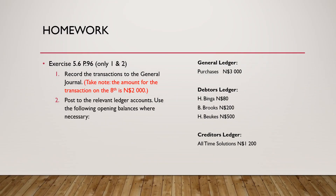Homework for your next lesson: Exercise 5.6, page 96. Do only number one and two. Number one: record the transactions to the general journal — take note that the amount for the transaction on the eighth is 2,000 NM. Number two: post to the relevant ledger accounts using the following opening balances when necessary — General Ledger: Purchases 3,000 NM; Debtors: Slager/Hubinger 80 NM, B. Brooks 200 NM, HB Acres 500 NM; Creditors: Slager All-Time Solutions 1,200 NM. Good luck and stay safe.